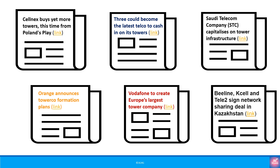In other cases, some MNOs are forming their own tower companies from which they can lease the sites. This allows them to convert their CapEx to OpEx while keeping control of their own towers. In other cases, the tower companies are buying the towers from operators and leasing them back. This way, the operators do not have to worry about the towers and sites in any way and it all becomes OpEx.